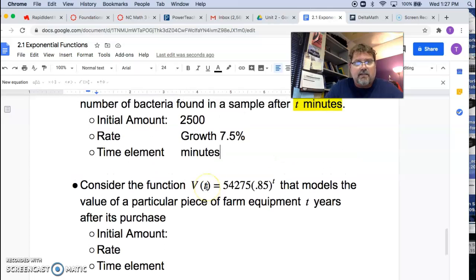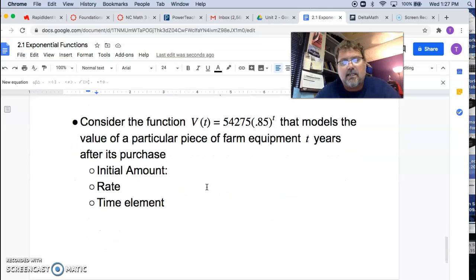And I want to take a look at one more in this video. And this one says, consider the function V(t) = $4275(0.85)^t that models the value of a particular piece of farm equipment two years after its purchase. All right. Now, how much was paid for the vehicle? You can see it living right here in front. It was $54,275, I'm assuming. It doesn't specify, but I'm going to jump into that. And they paid this much for it, right? Just living right out front. Initial amount.